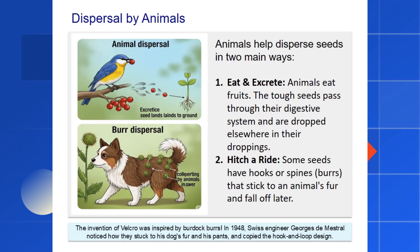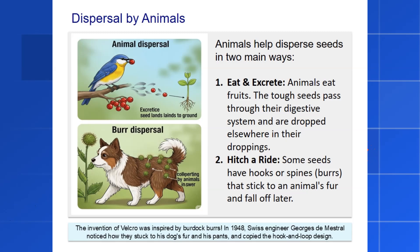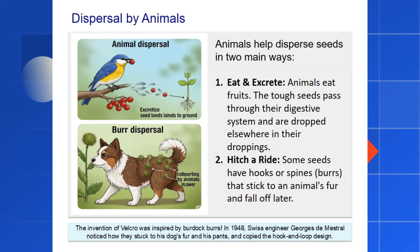Here's an amazing fun fact. The handy fastener Velcro was directly inspired by seed dispersal. After a walk, a Swiss engineer named Georges de Mestral examined the burrs stuck to his dog's fur under a microscope. He saw they had tiny hooks that grabbed onto loops in the fur, and he used this hook-and-loop idea to create Velcro.